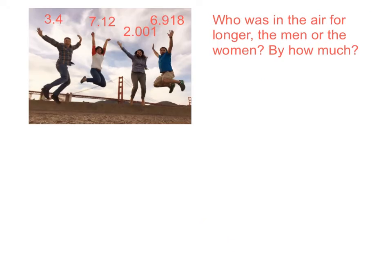Our next one is another jump shot, but rather than using heights this time, I'm using how long we were in the air. David was in the air for 3.4 seconds, Jess was in the air for 7.12 seconds, Crystal was in for that long, and I was in the air for that long. So now I want to know: who was in the air for longer, the men or the women, and by how much? David and I are the men; Jess and Crystal are the women. This is a multi-step problem — work it out and check them.